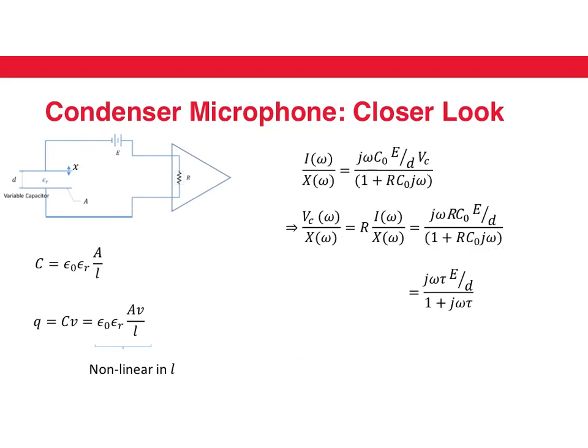Now from this, we can get what the output voltage across the resistor is going to be. That's basically going to be done by multiplying I over X with R, because R into I is the voltage or output of the condenser microphone. If we do that, we see that the output of your microphone and the displacement are related by this equation. What is interesting here is that this is a gain relationship. It tells you how a displacement results in what voltage of the condenser microphone, with respect to frequency.